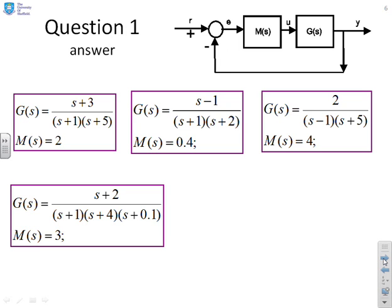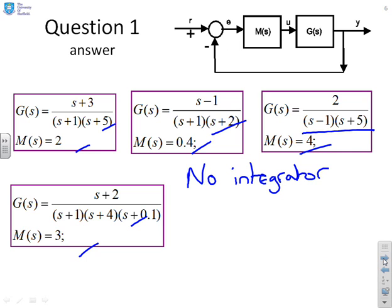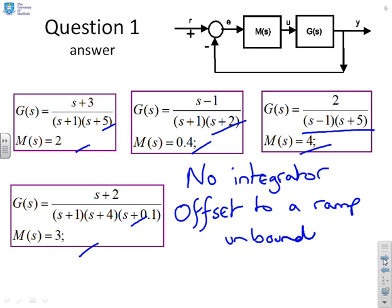So if we look at all these four examples, what you'll notice jumps straight out at you is there is no integrator, no integrator in G or M in any of these cases. And therefore, the offset to a ramp is unbounded. And that's all you would need to do when answering a question. Say no integrator in the loop, so the offset to a ramp is unbounded.